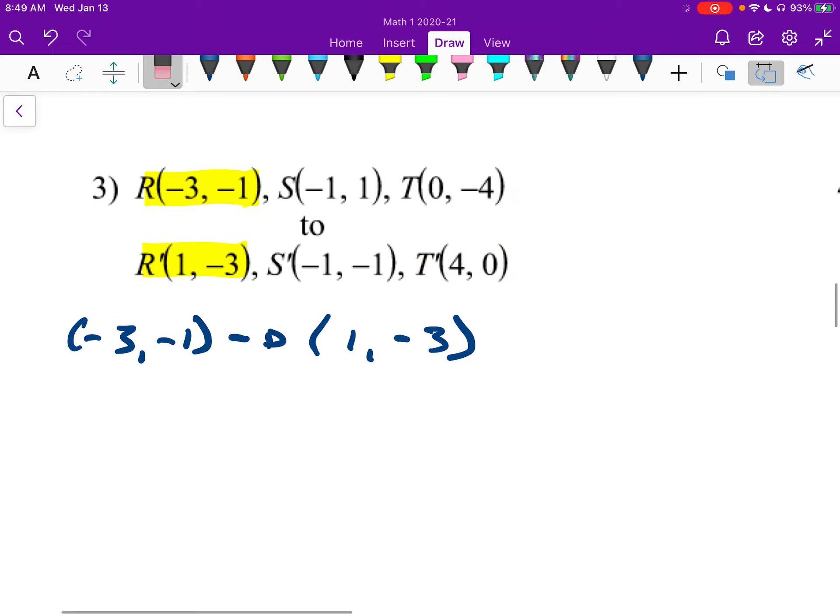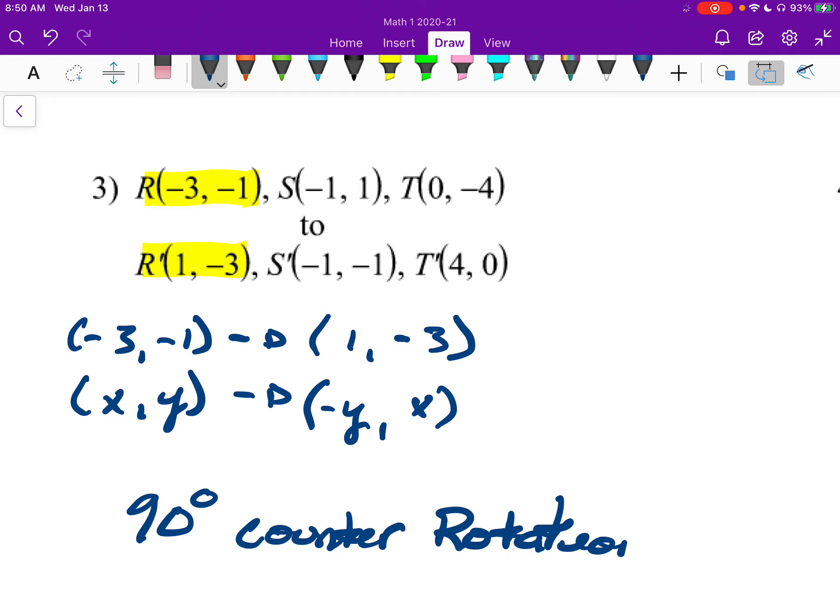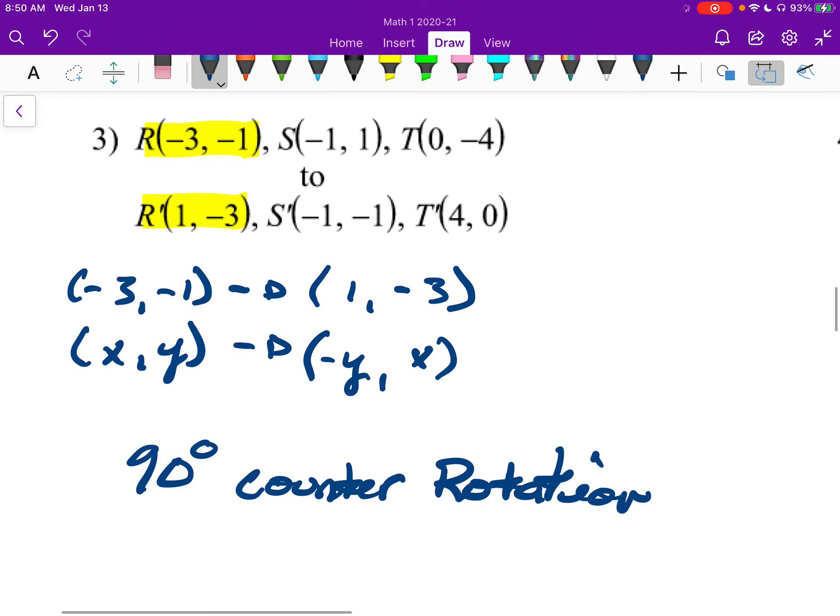So back to the problem. So this is like x, y. You always start with x and y. And then our y is a negative 1, and we end up with a positive 1. So it will be a negative y. And then x is a negative 3, and we end up with a negative 3. So there we are. So we have negative y, x. That would be a 90 degree counterclockwise. Right? And we could also say that this is a 270 degree clockwise.